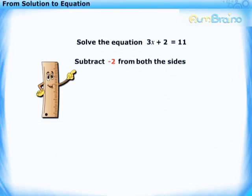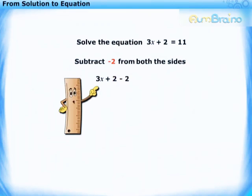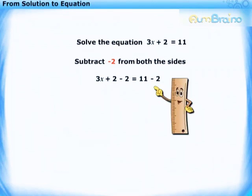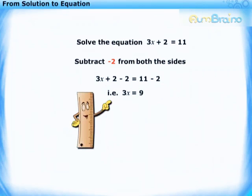By subtracting minus 2 from both the sides, we get 3x plus 2 minus 2 is equal to 11 minus 2. That is, 3x is equal to 9.